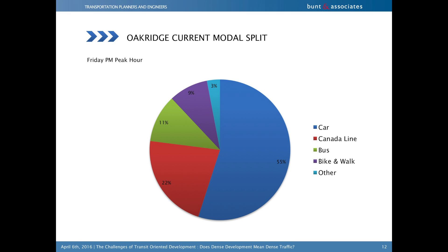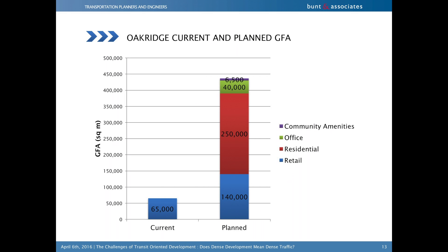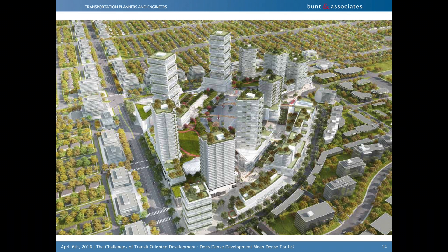It's actually already doing a fairly good job: 55% of people by car, and the Canada Line - the rapid transit connecting Richmond and the airport to downtown Vancouver, which Oak Ridge is on - is moving quite a lot of people at 22%, with other buses doing about 9%. So it's not doing too bad. Even using low trip rates, we're using a vehicle trip rate of 0.22 trips per residential unit in the PM peak hour, which is about half the standard ITE rate.